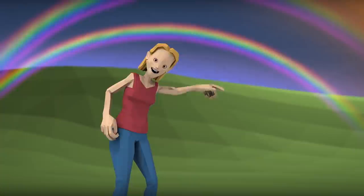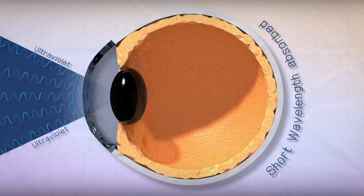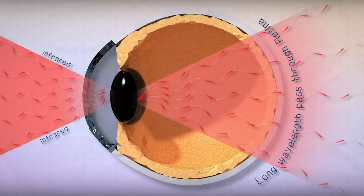If light shines on us that has an energy our retina can't measure, we won't be able to see it. Light that is too short wavelength or high energy gets absorbed by the eye's surface before it can even get to the retina, and light that is too long wavelength doesn't have enough energy to stimulate our retina at all.